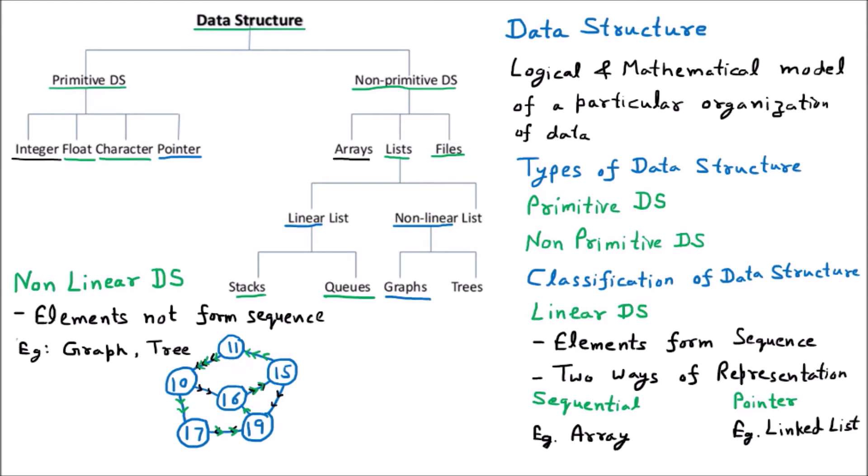So this is called the graph. The graph can be cyclic. Cyclic means they are making the cycle or they cannot be having the cycle. So this is the example of the graph.